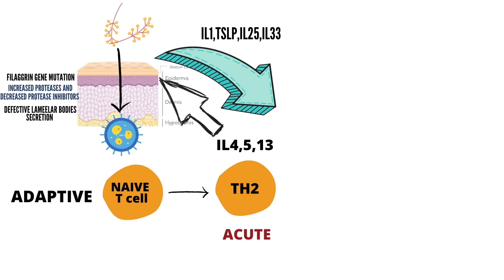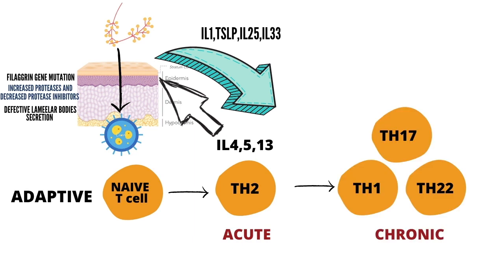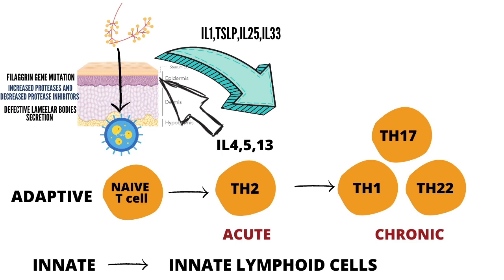This creates an interlinked cycle: because of TH2 response, cytokines are secreted by keratinocytes which further promote TH2 response. Thymic stromal lymphopoietin (TSLP) has a central role in evoking TH2 response and also plays a role in the itching associated with atopic eczema. In the chronic phase, there is TH1, TH17, and TH22 response. Notably, TH17 response — typically studied in psoriasis — also has a role here. Additionally, innate lymphoid cells are expanded in atopic dermatitis, further evoking TH2 response.